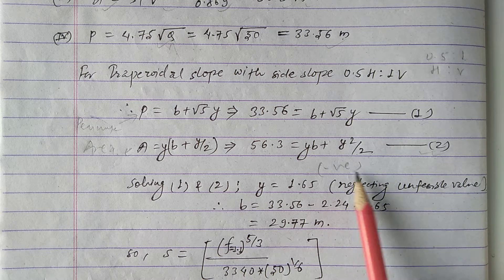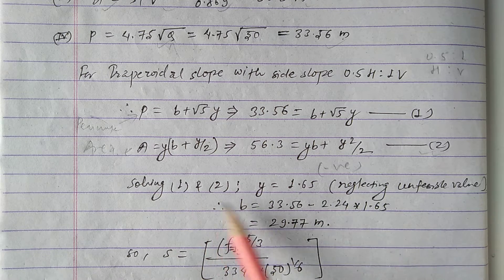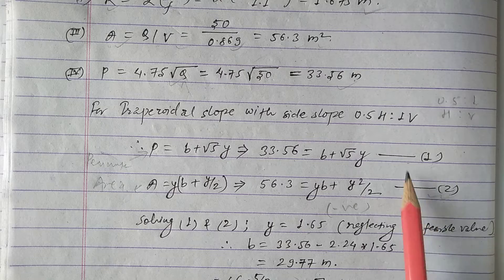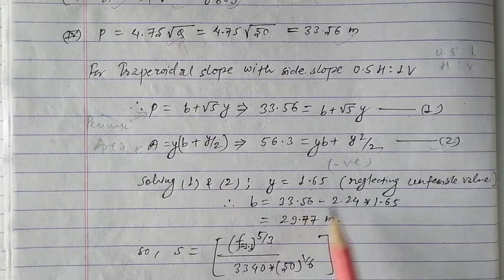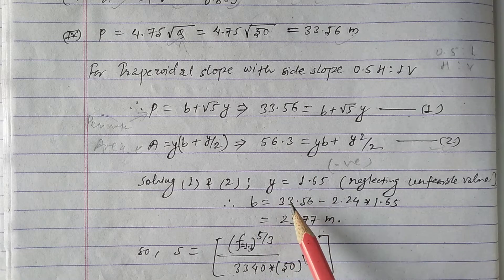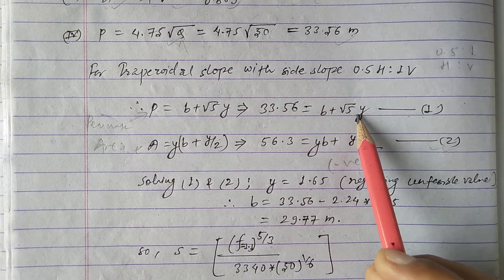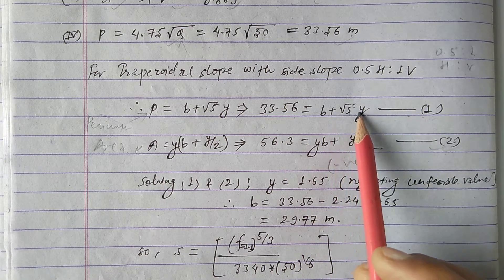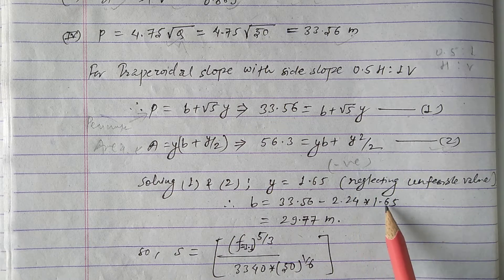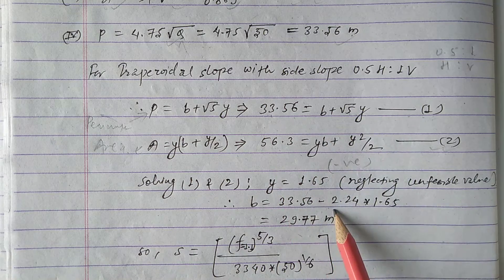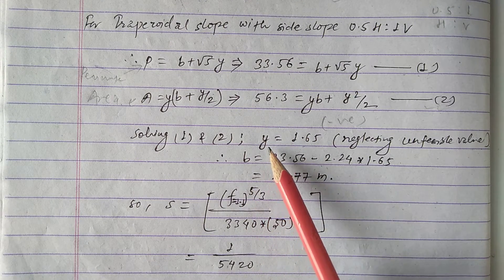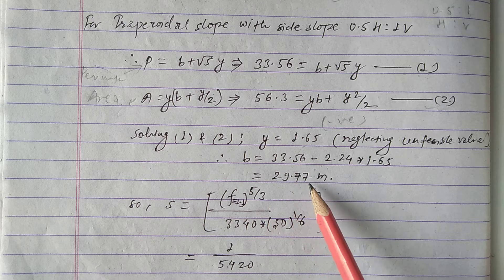Now we can determine B by substituting y = 1.65 into either equation. Using Equation 1: 33.56 = B + 2.05 × 1.65, so 33.56 = B + 2.2 × 1.65 (moving the term to the left side) gives B = 33.56 − 3.79 = 29.77 m. So y = 1.65 m and B = 29.77 m.